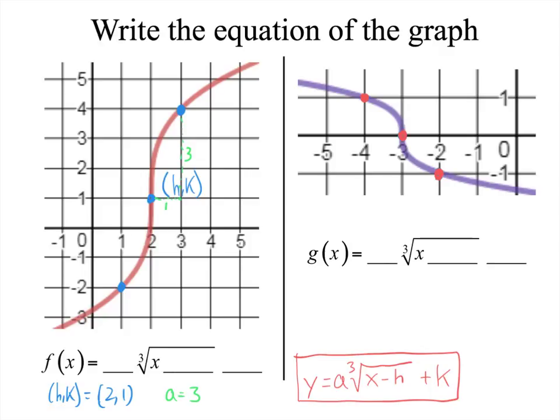So what you should notice here is your A value is 3, exactly what we wrote down. Now, what comes next to the X is an X minus 2. And then we have plus 1. Now, be careful. Where do I get minus 2 from?